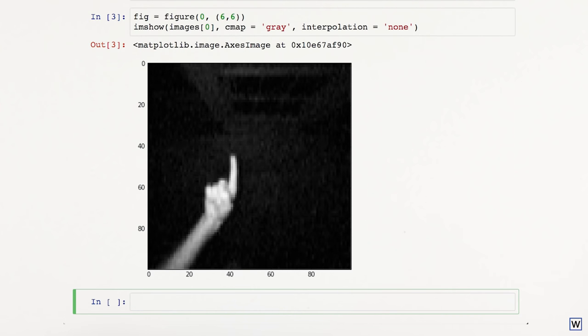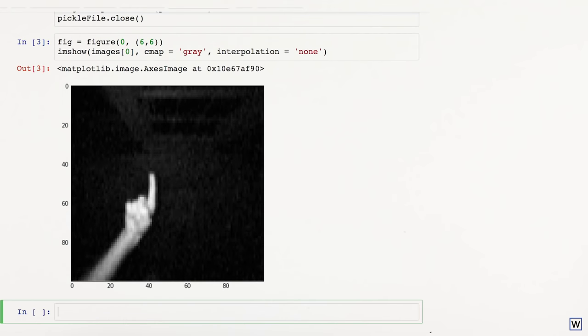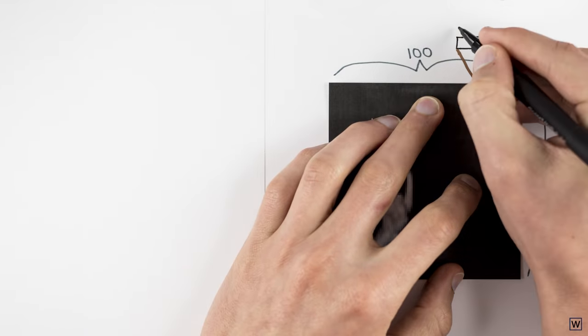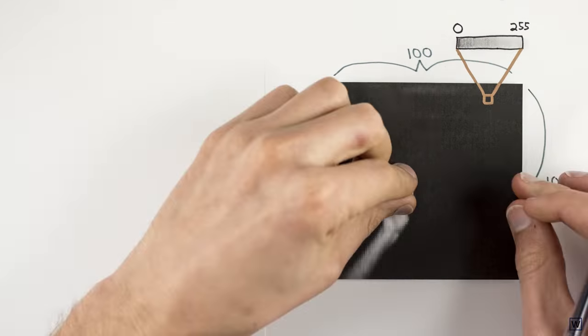Cameras, like the one in our Leap Motion sensor, and our eyes to some extent capture light in discrete blocks called pixels. Our images are made up of 100 by 100 grids of pixels, where each pixel is completely described by an intensity value between 0 and 255.